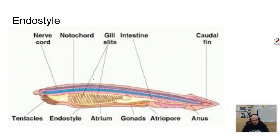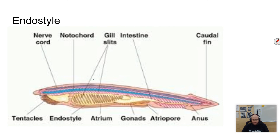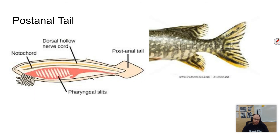Fourth is the endostyle. The endostyle becomes the thyroid gland, which is found in all chordates. It's used to trap food in protochordates — the first chordates — and in lamprey larvae as well. Our own thyroid is one of the organs that regulates our metabolism. The endostyle is something found in all chordates, so that's why it's mentioned.